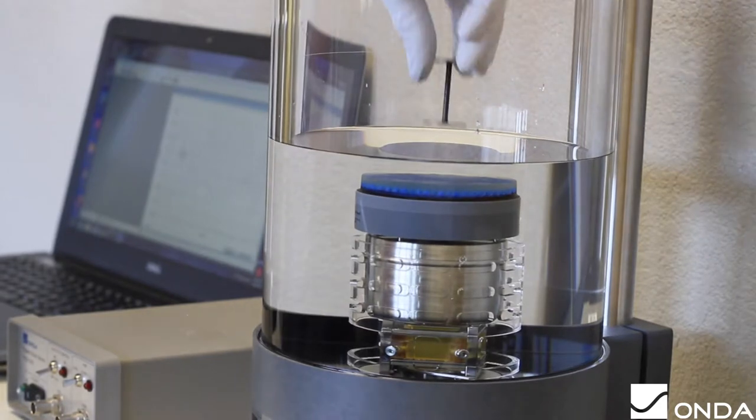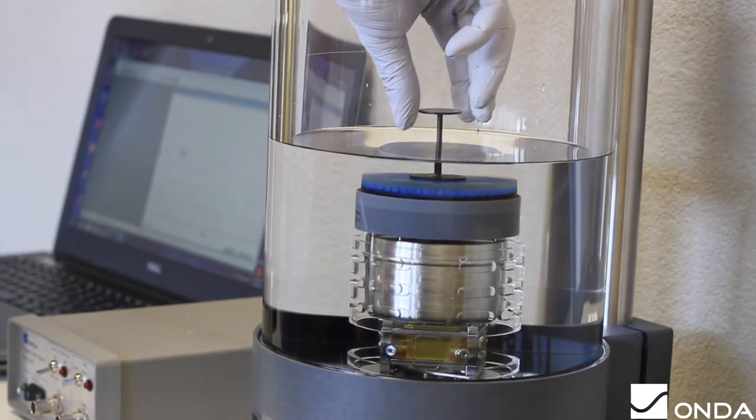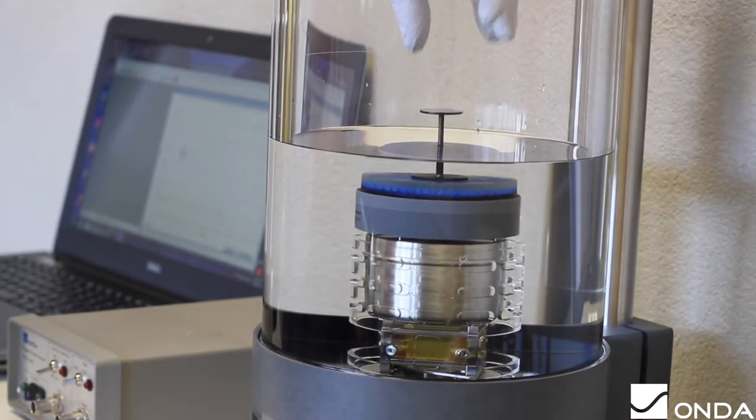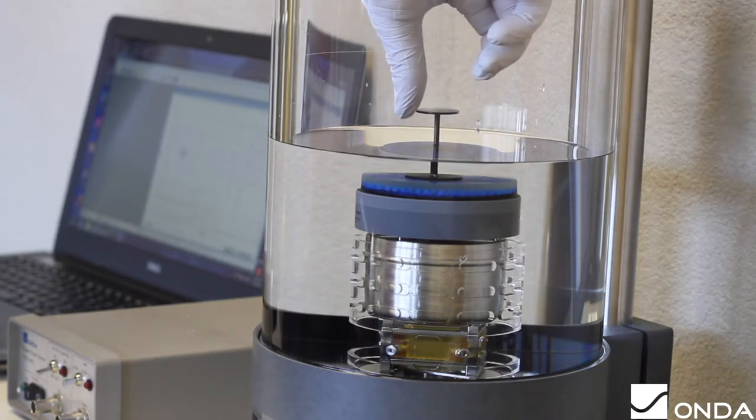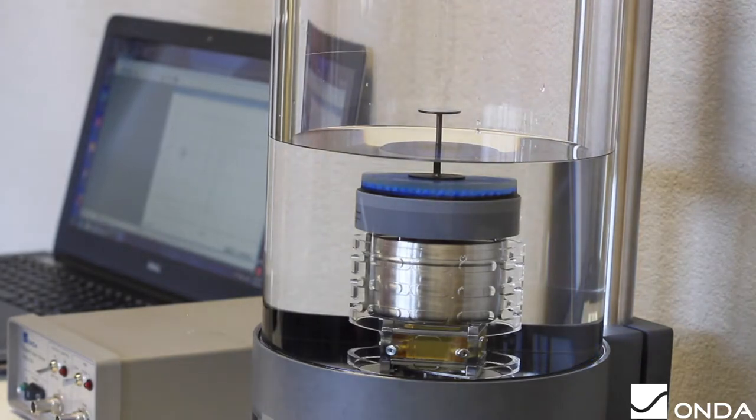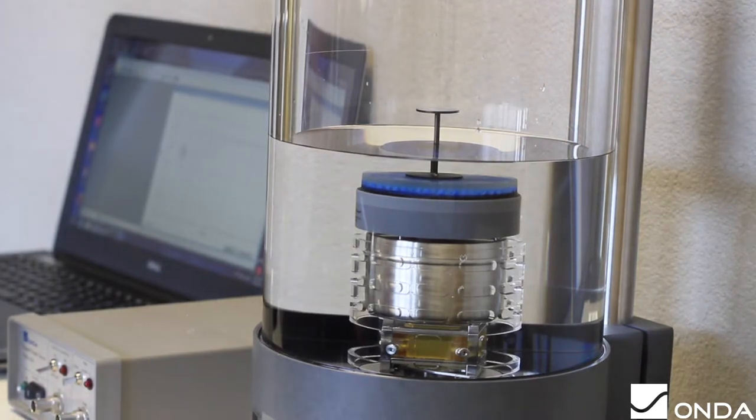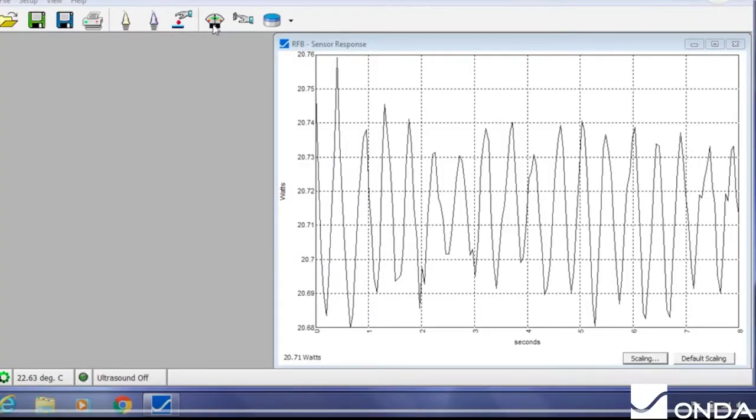To calibrate the RFB-2000, place the plastic stand vertically on top of the sensor so that half of the stand is above water and the other half below. This will allow the user to apply the calibrated standard weight to simulate a constant ultrasound power.